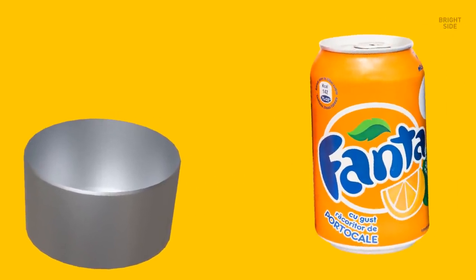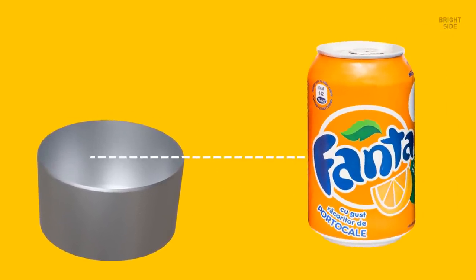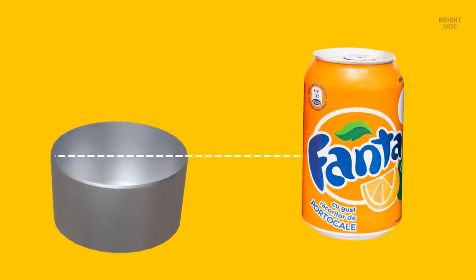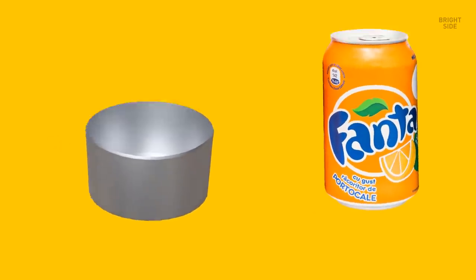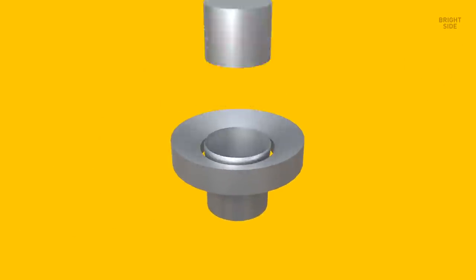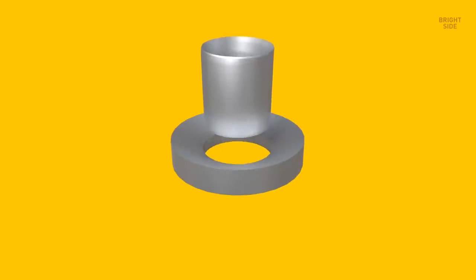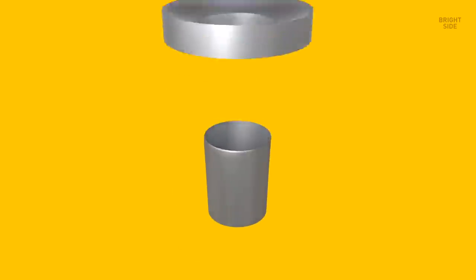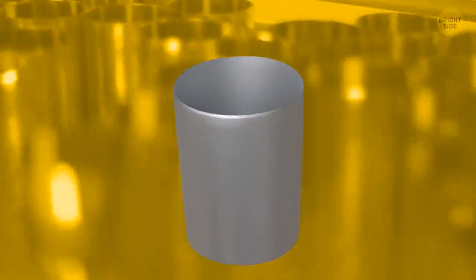This cup is still slightly larger than the final can and is also way shorter. So there are a couple more steps to go through. You take that large cup and punch out a smaller diameter. Then, the punch once again presses the cup. Now, the cup is smaller in diameter and a bit higher already.